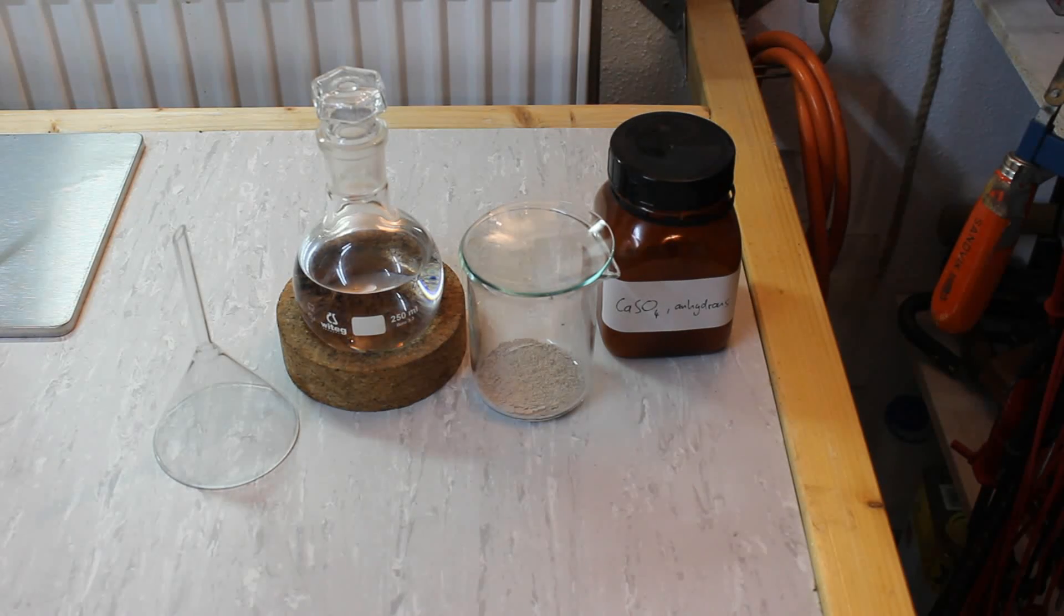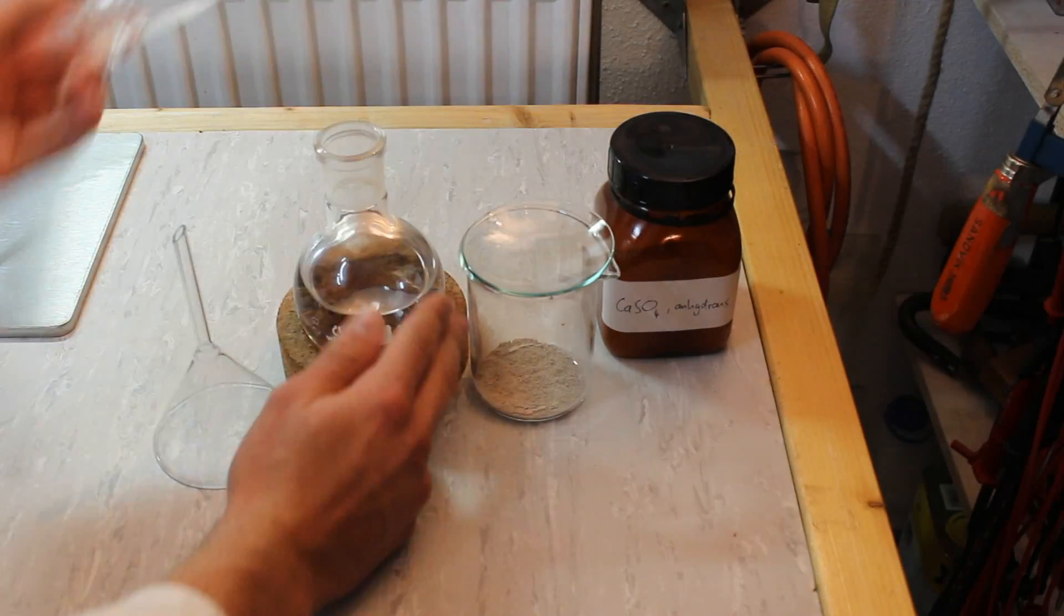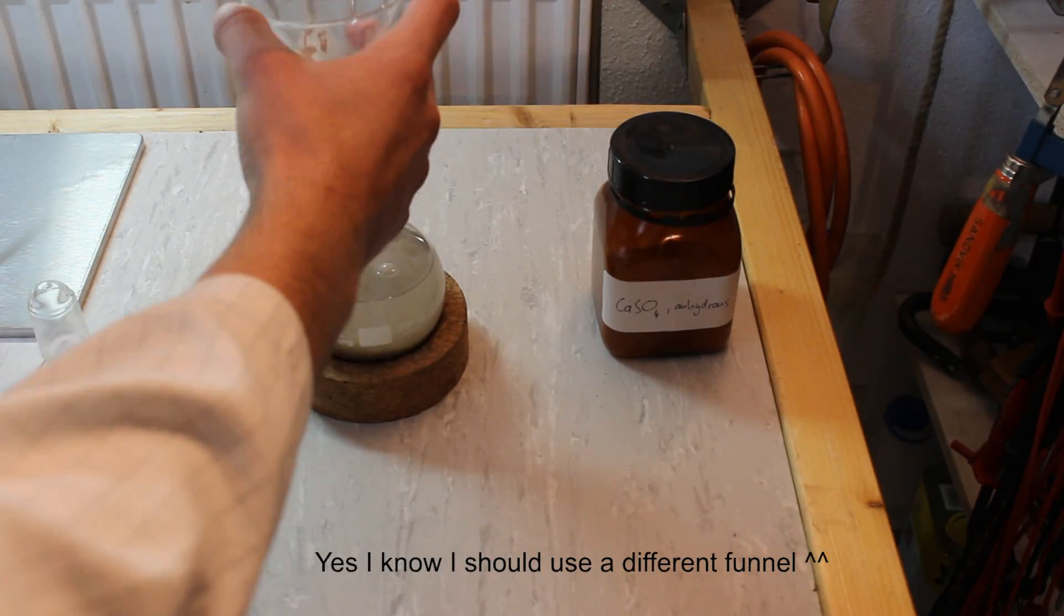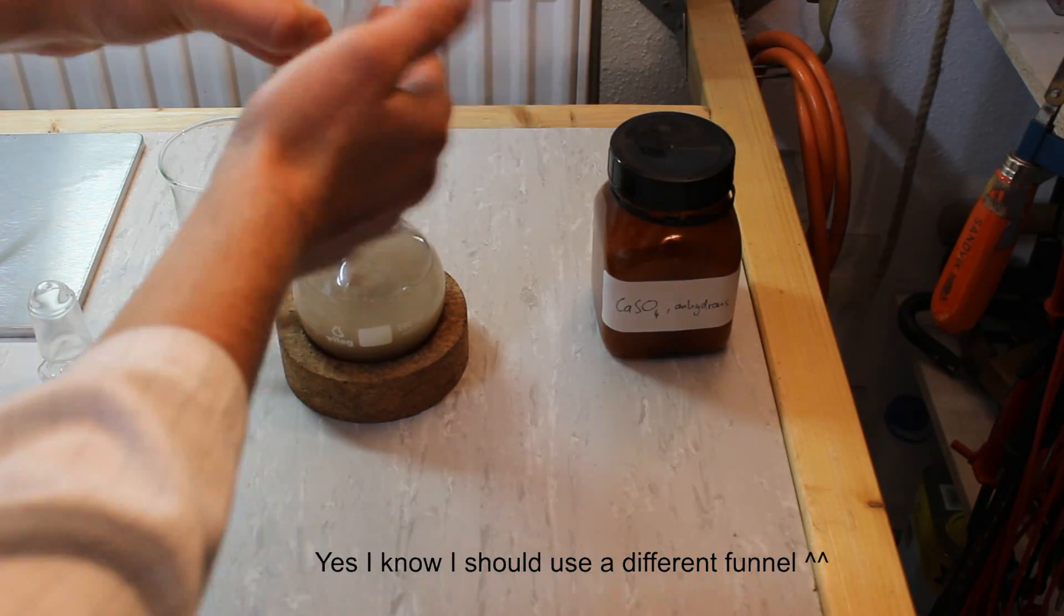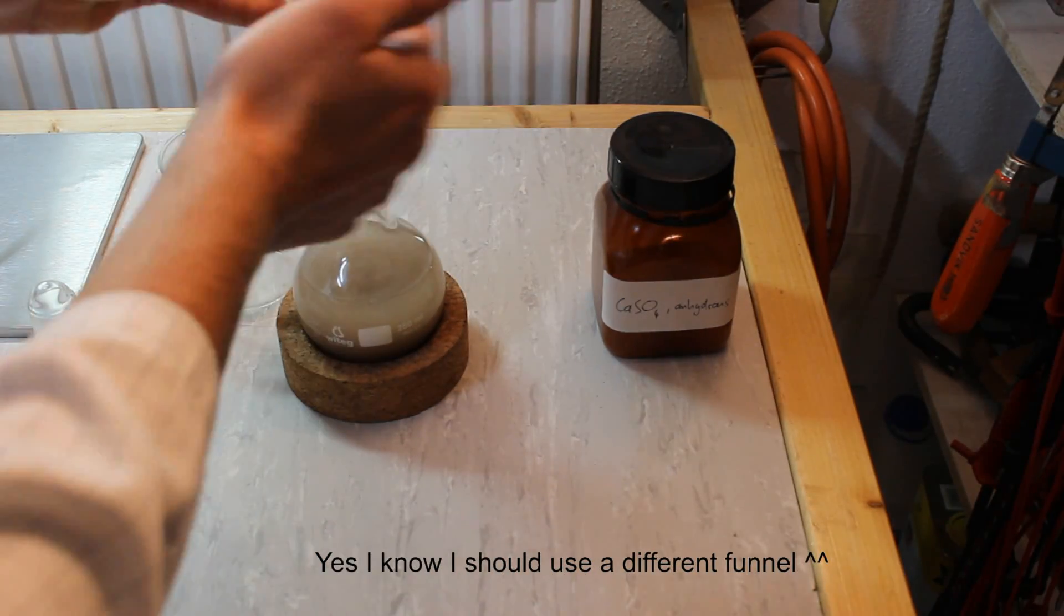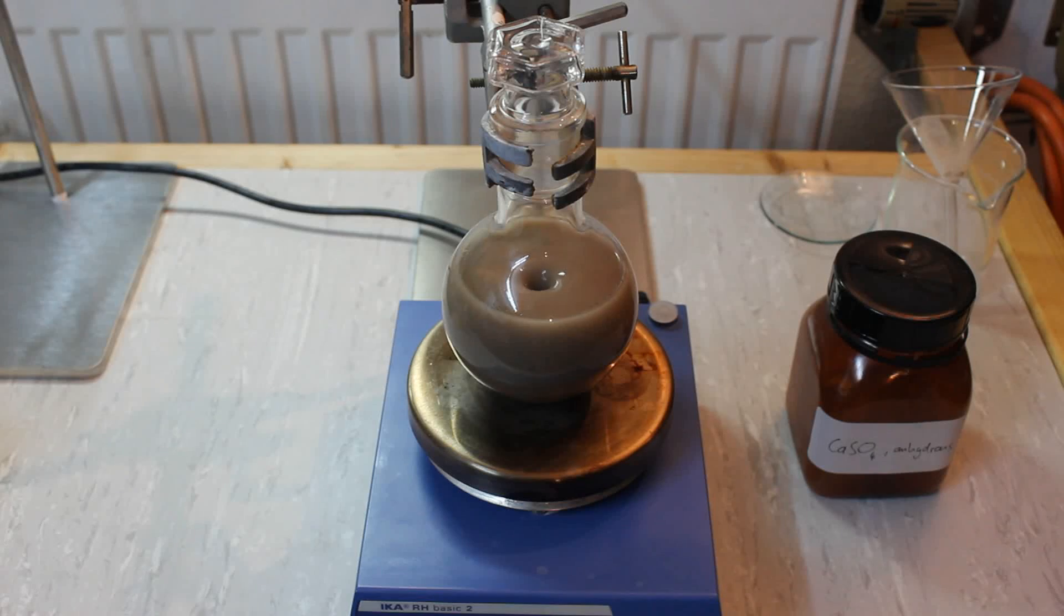So without further ado, let's add the drying agent to our acetone. I'm now going to let the acetone and the calcium sulfate stir for a couple of hours, then turn off the stirring and let the calcium sulfate settle to the bottom.